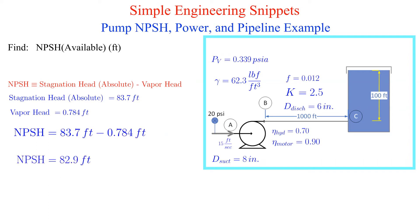Note that we have calculated the available net positive suction head. This is the actual net positive suction head available at the pump suction. We would need to obtain the required net positive suction head from the manufacturer pump curves for the provided flow. We are not doing this in this example.